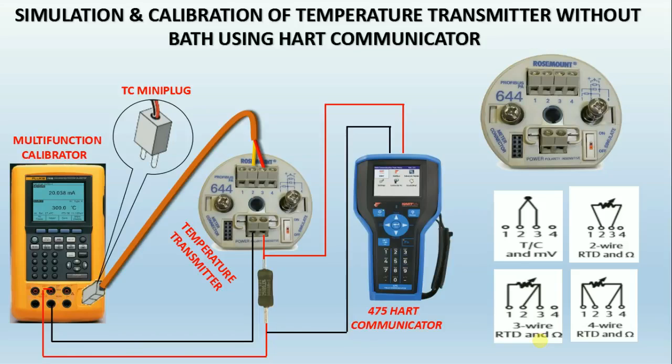Before calibrating, the transmitter has to be configured to thermocouple K-type by using the HART communicator. This process calibrator can be used for sourcing the temperature according to your range, and it can also measure loop milliamps according to the temperature we are sourcing.